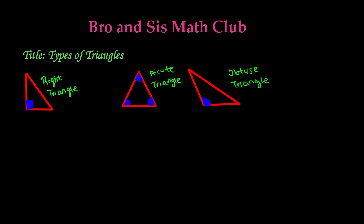Just from looking at the names, these remind us of our angles. We have a video on this called Types of Angles, so if you want to watch that, please go ahead and do so. Our three basic types of angles are right angle, acute angle, and obtuse angle. A right angle is an angle that is exactly 90 degrees.